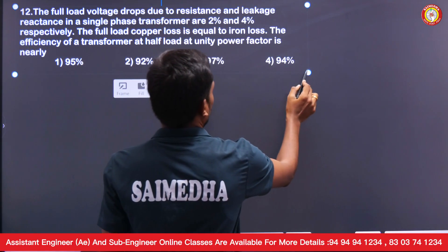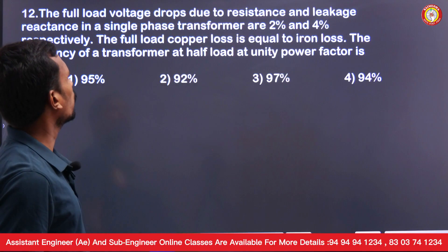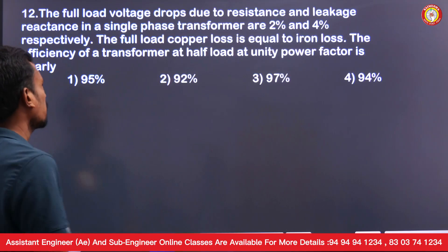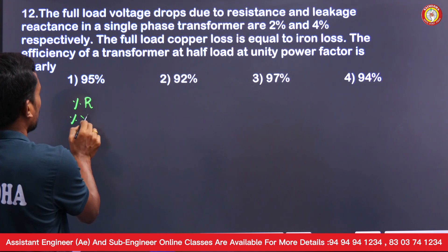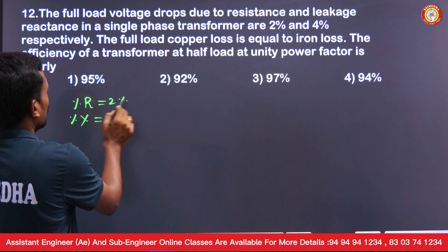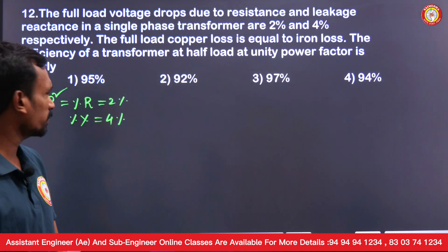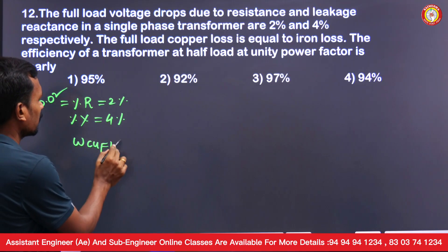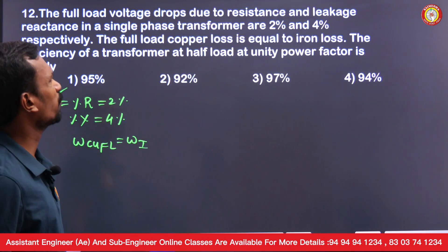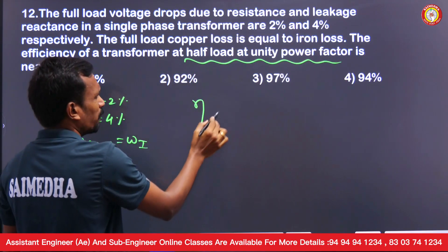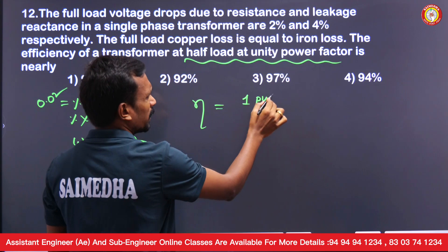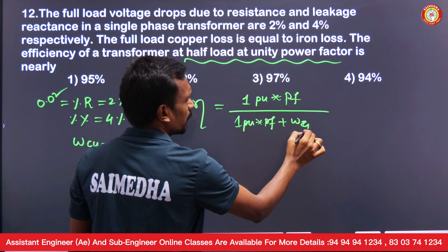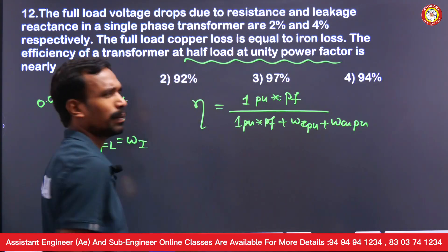Next question: a single phase transformer has full load voltage drops due to resistance and leakage reactance of 2% and 4% respectively. So per unit resistance = 0.02 and per unit reactance = 0.04. The full load copper loss equals the iron loss. Find efficiency at half load and unity power factor.